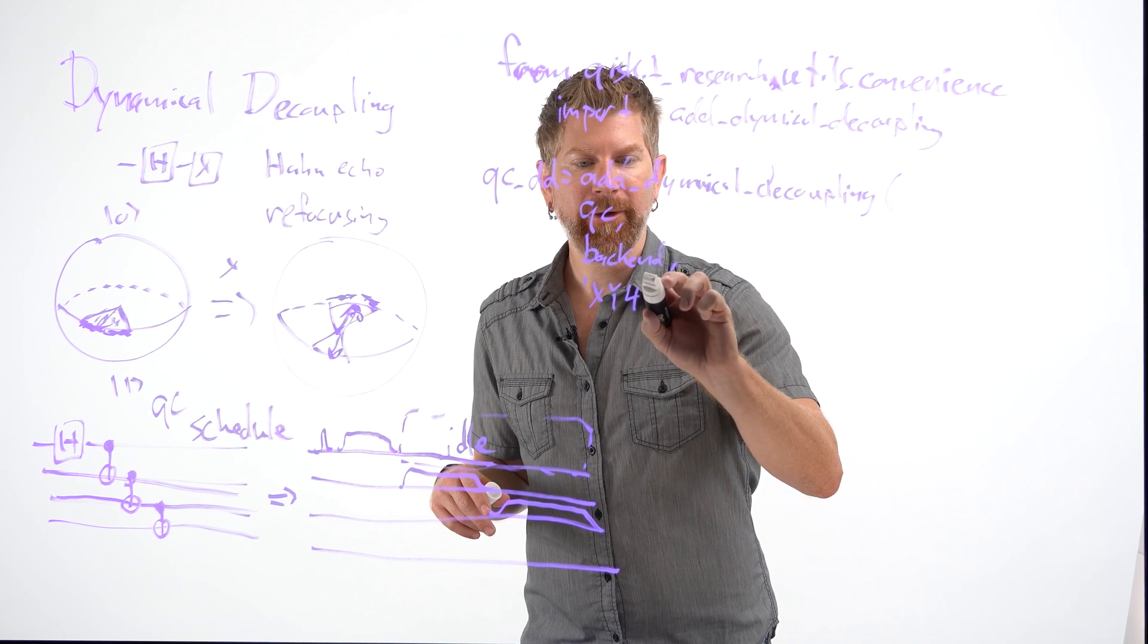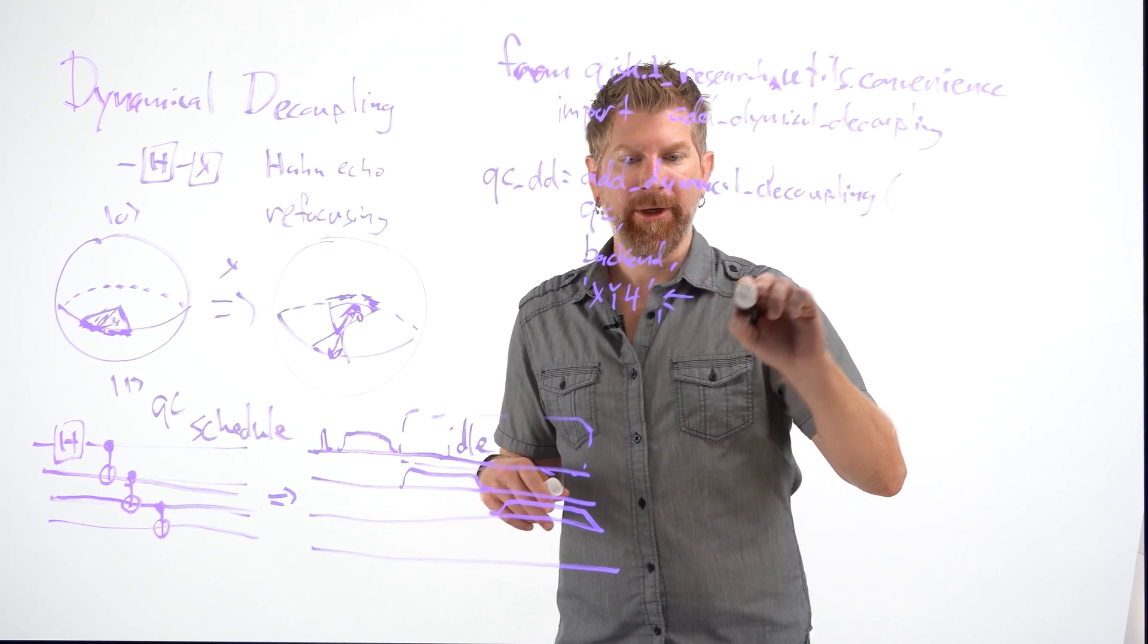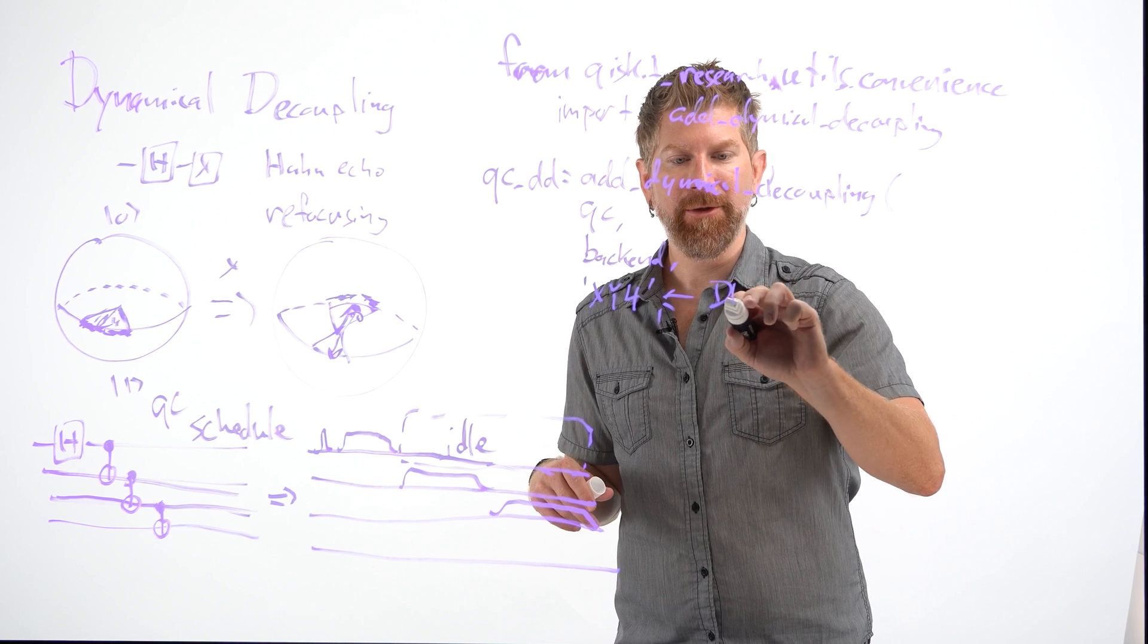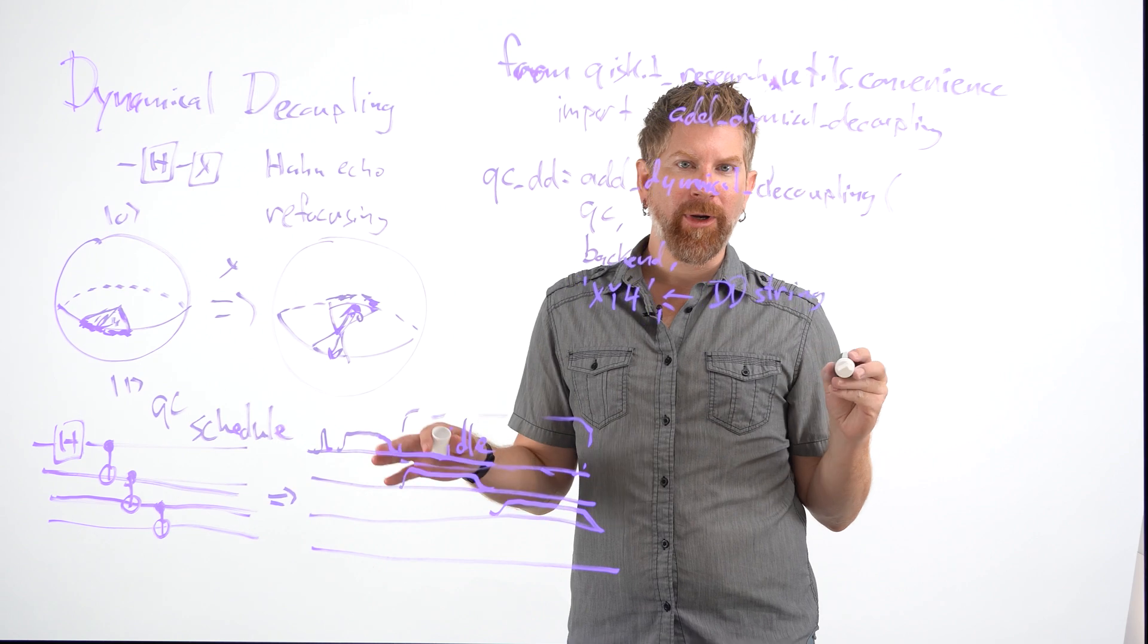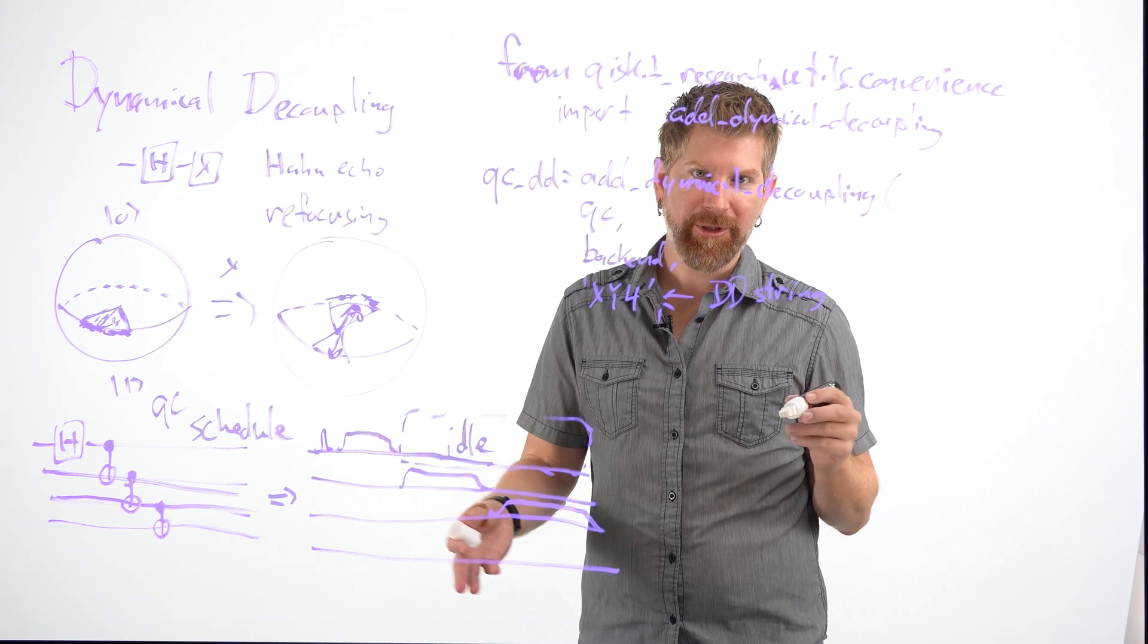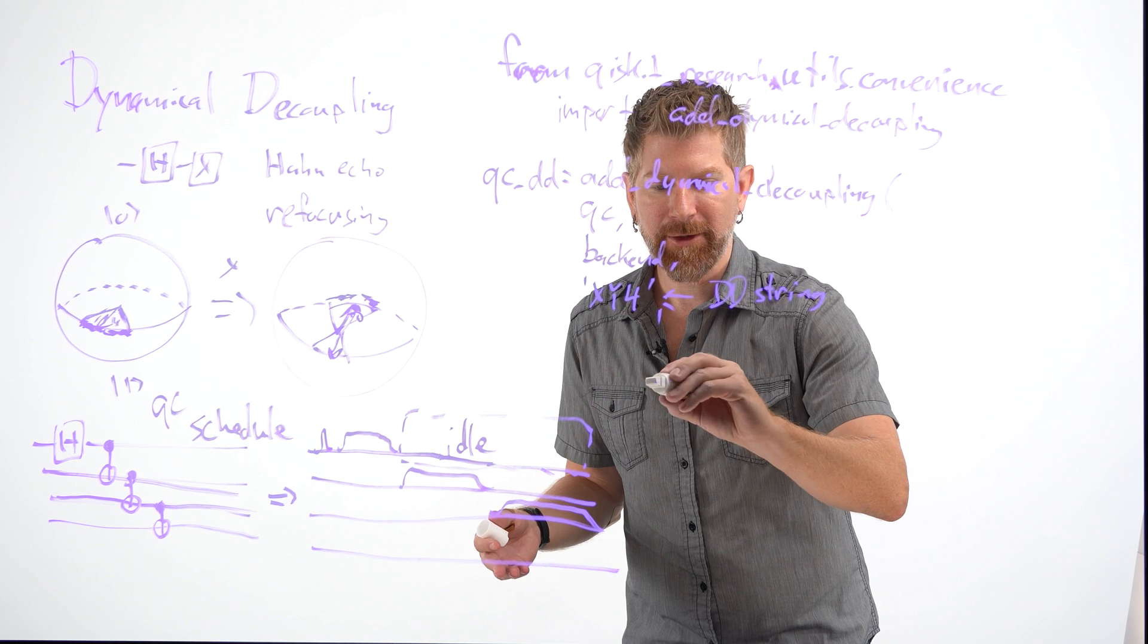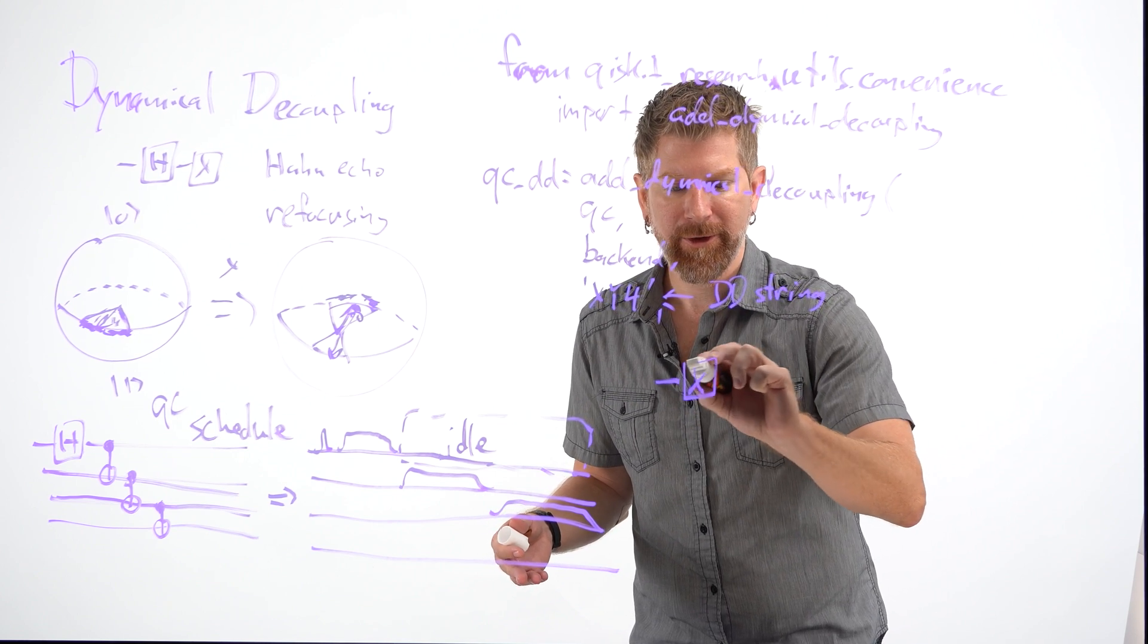the DD sequence you want. And for this, we'll use, say, XY4. Call this the DD string. And what XY4 does, is it's just one example of a dynamical decoupling sequence. And it will add the gates and the timing information for this series.